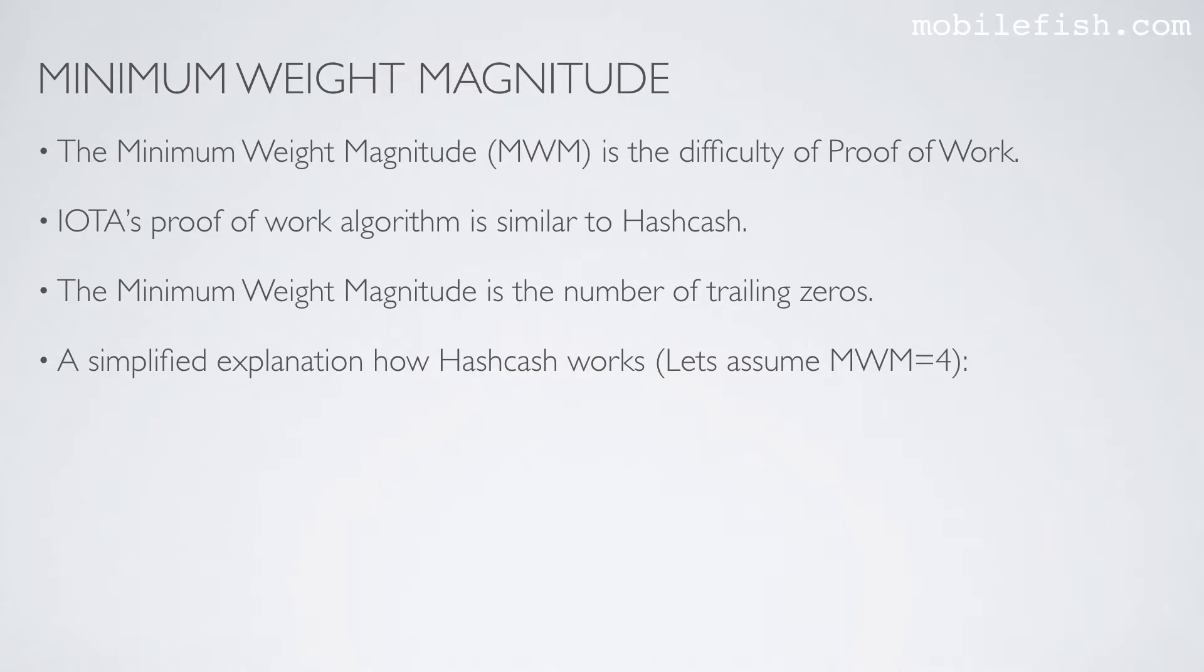A simplified explanation of how hashcash works. Let's assume the minimum weight magnitude is set to 4. Here is the transaction data and you append the counter and then you hash this value, you will get this result. And if you look at the trailing 4 digits, the proof-of-work is not okay. You increase the counter and you apply the hash, you will get a different hash value.